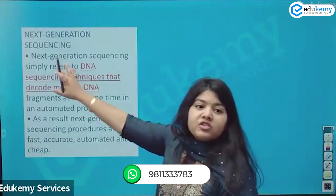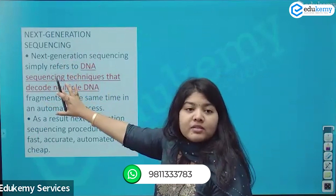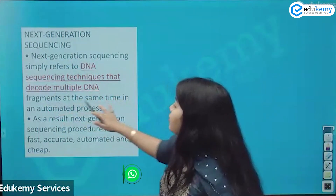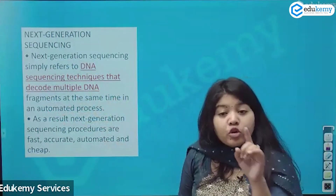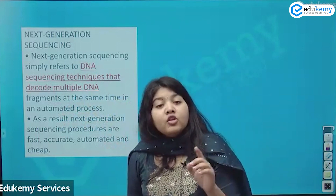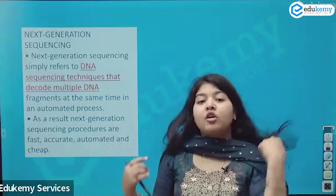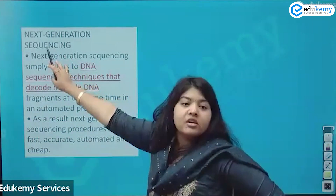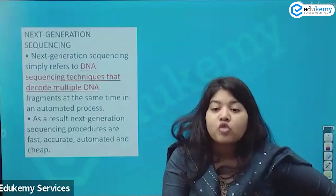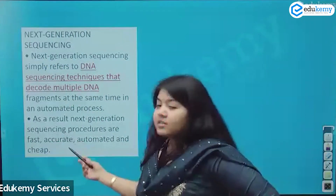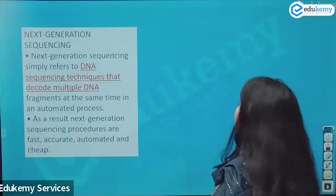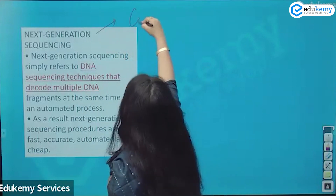What is Next Generation Sequencing? It is DNA sequencing that decodes multiple DNA fragments at the same time. In the USA and western countries there are labs that give you the result of your DNA and your ethnic belonging. That is basically Next Generation Sequencing — it is automated, it is fast, it is accurate, it is cheap. This is the commercialization of DNA sequencing.